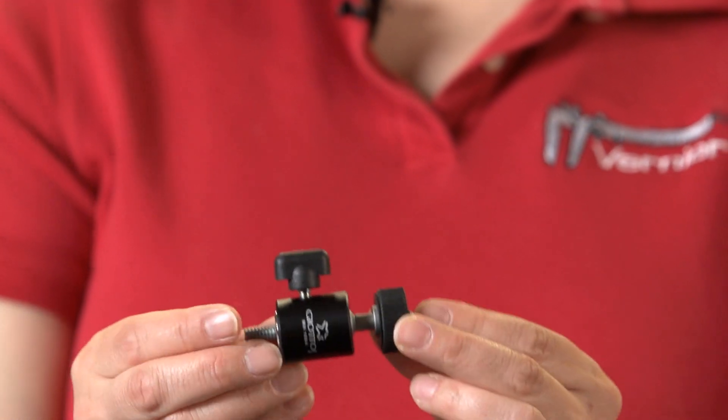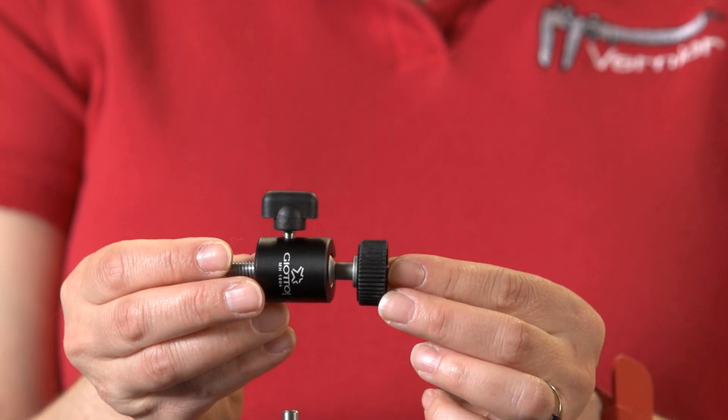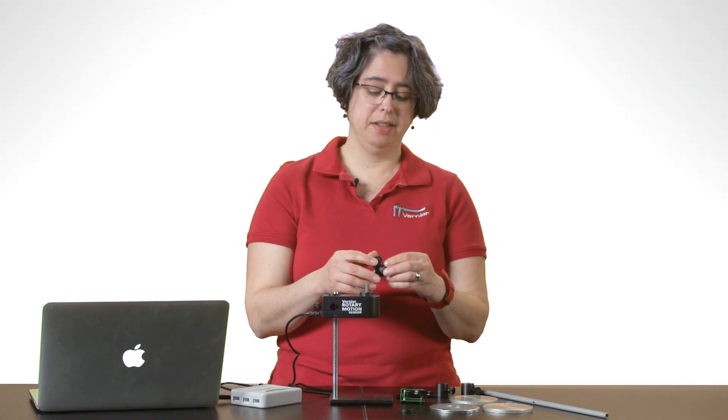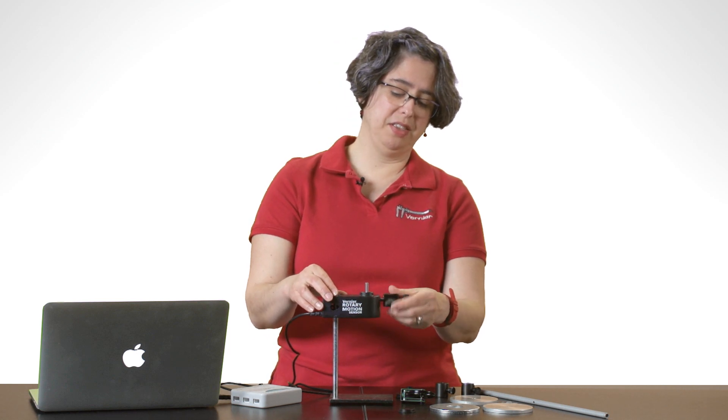So the first thing that I want to attach is the pulley, and I'm going to need to do that with this piece here, which comes with the Rotary Motion Accessory Kit. It attaches at this point.